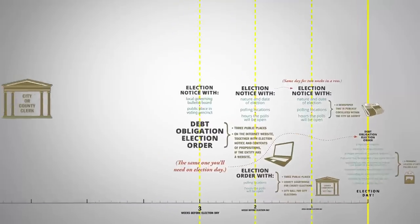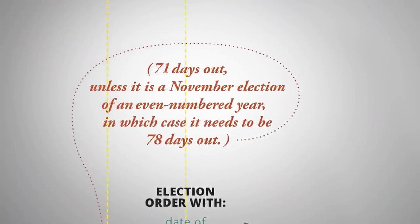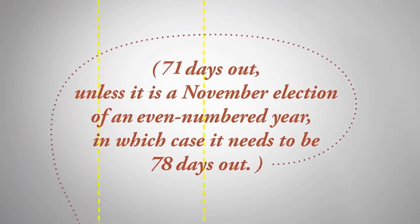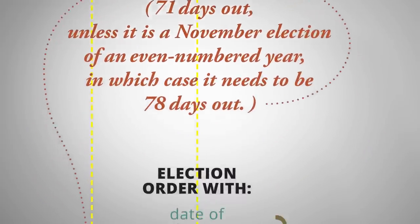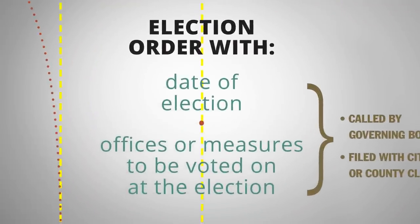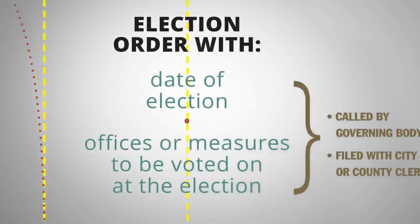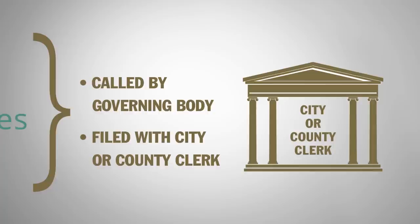A general election in November of even-numbered years for state and county officers must be called at least 78 days out from election day, and all other uniform elections must be ordered at least 71 days out. An election order includes the election date and the offices and measures to be voted on, and is filed with your city or county clerk.